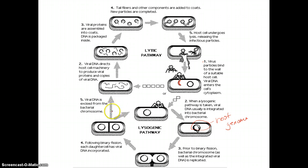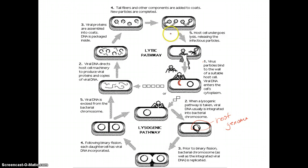But then suddenly something triggers that viral DNA to go into the lytic pathway. When that happens, the viral DNA will take over the cell's genome, make it produce viral parts, and assemble new viruses. Once those new viruses are assembled, it breaks open — or lyses — the cell, and millions and millions of viruses are released.